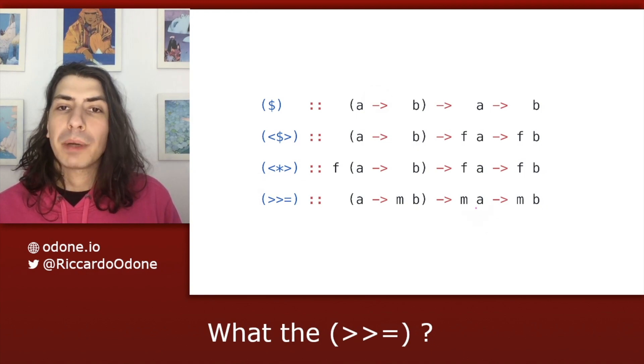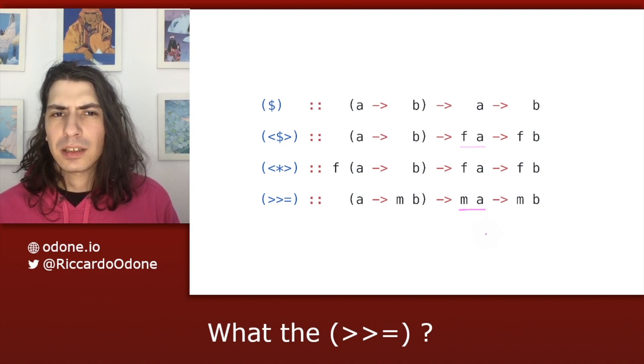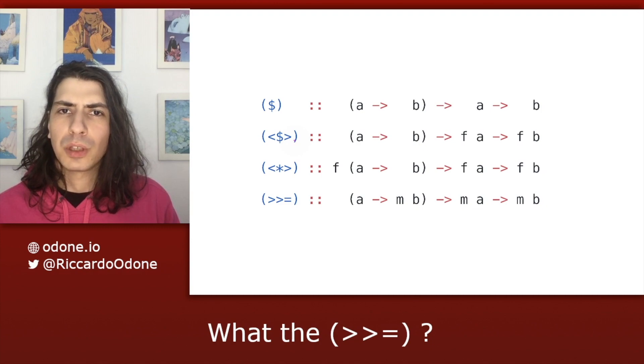Now with bind, we have a similar situation as in fmap, meaning that the initial value is wrapped up in a context. You can go back to the video about fmap to see what being in a context means, but in any case, the initial value is wrapped up in a context.